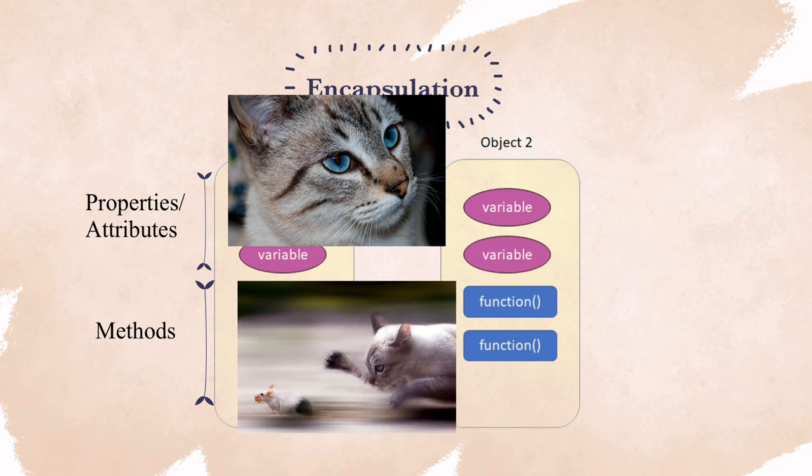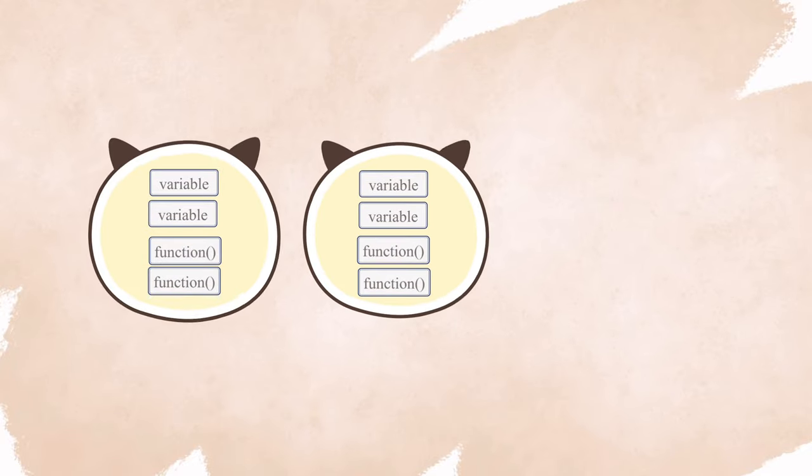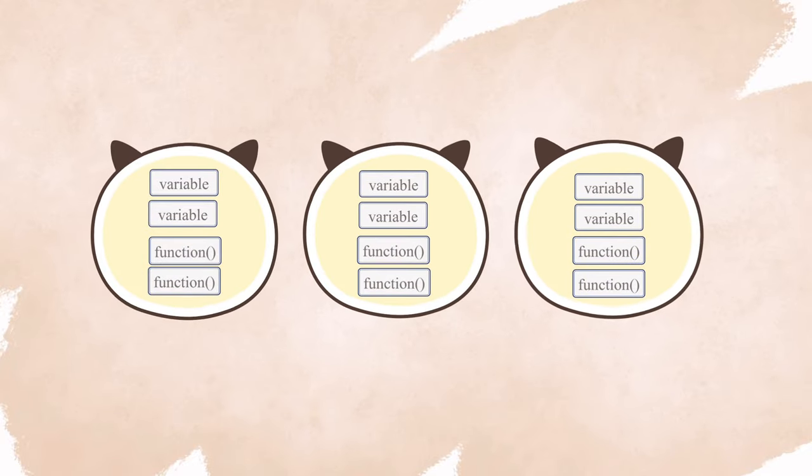On the other hand, methods are essentially the ability of the object to do things, such as a cat knows how to catch mice and say meow. Objects can interact with each other by making reference to each other's properties and by calling each other's methods. Encapsulation makes the code easier to reproduce and maintain.